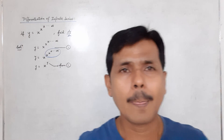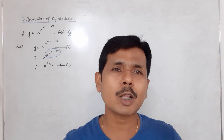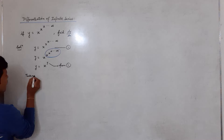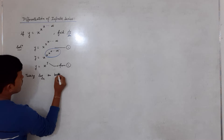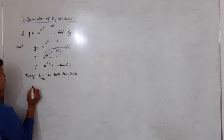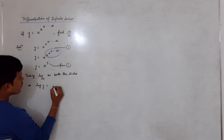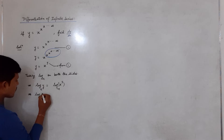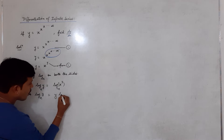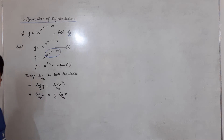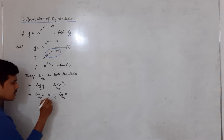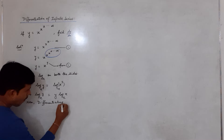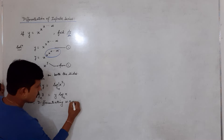Now it is easy to solve. What you have to do is take logarithm on both the sides. So I am taking log on both the sides. It will be log of y equal to log of x to the power y. Then you have to bring y in front of log of x according to the rules of logarithm. Now it is easier to differentiate.